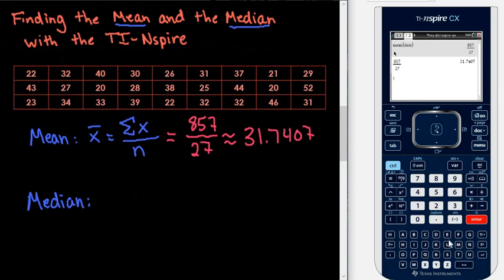We can do the same thing with the median. I can actually type in the word median. It's another command that the calculator recognizes. And then I do my parentheses and again I just select my variable of data and hit enter and it gives me 31.